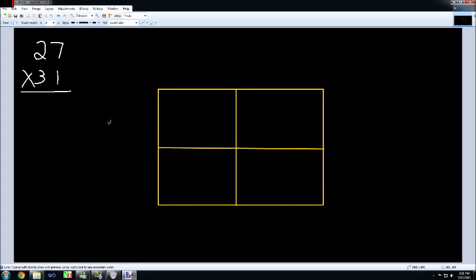Today I'm going to demonstrate the box method of multiple digit multiplication. If you look up in the corner, you'll see that we have the number 27 times 31. Because you have two digits by two digits, you will draw a two by two box.